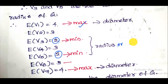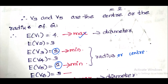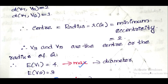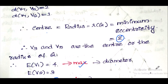This gives us the radius. The radius, otherwise known as the centre. Here we consider v3 and v5. The radius is equal to the minimum eccentricity, which is equal to 2. The center is v3 and v5.